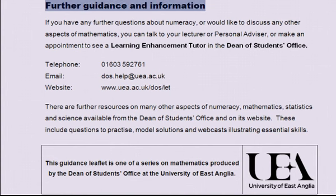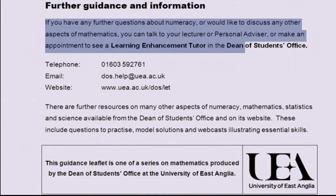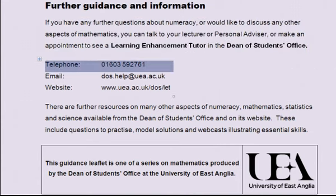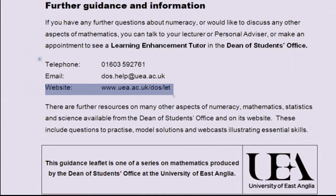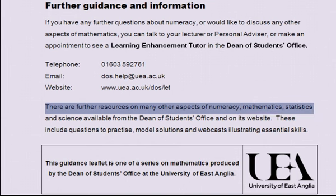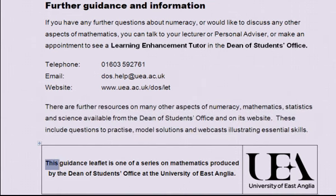Further guidance and information. If you have any further questions about numeracy, or would like to discuss any other aspects of mathematics, you can talk to your lecturer or personal advisor, or make an appointment to see a Learning Enhancement Tutor in the Dean of Students Office. You can telephone 01603 592761, email dos.help@uea.ac.uk, or visit our website at www.uea.ac.uk. There are further resources on many other aspects of numeracy, mathematics, statistics, and science available from the Dean of Students Office and on its website. These include questions to practice, model solutions, and webcasts illustrating essential skills. This guidance is one of a series on mathematics produced by the Dean of Students Office at the University of East Anglia.